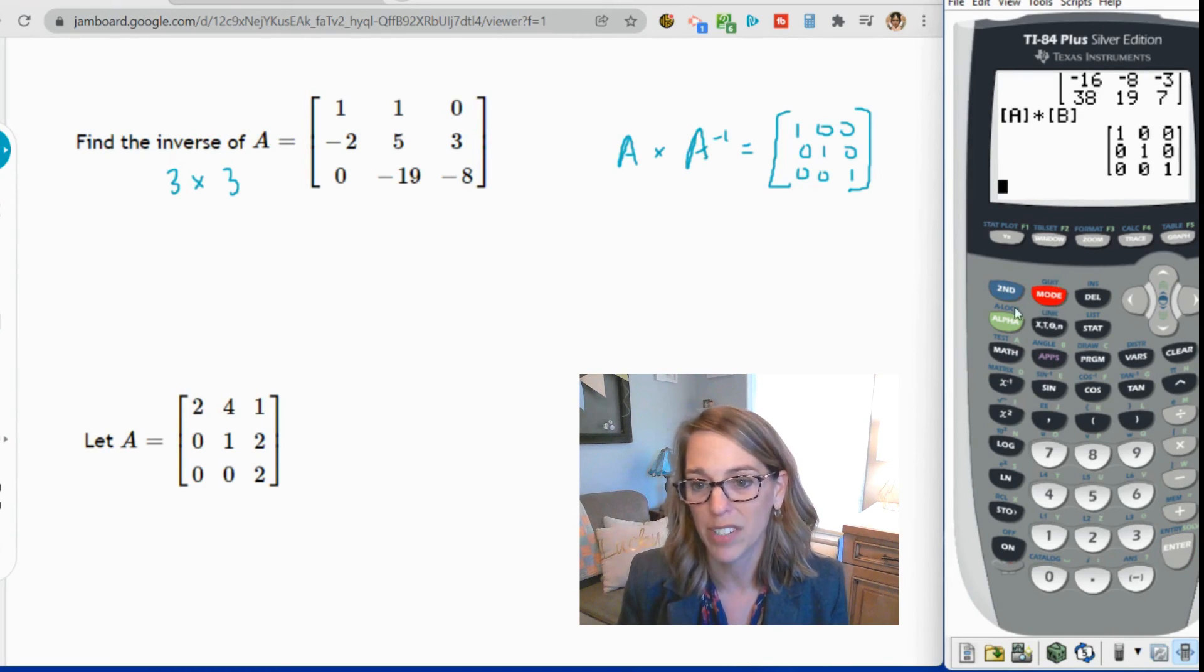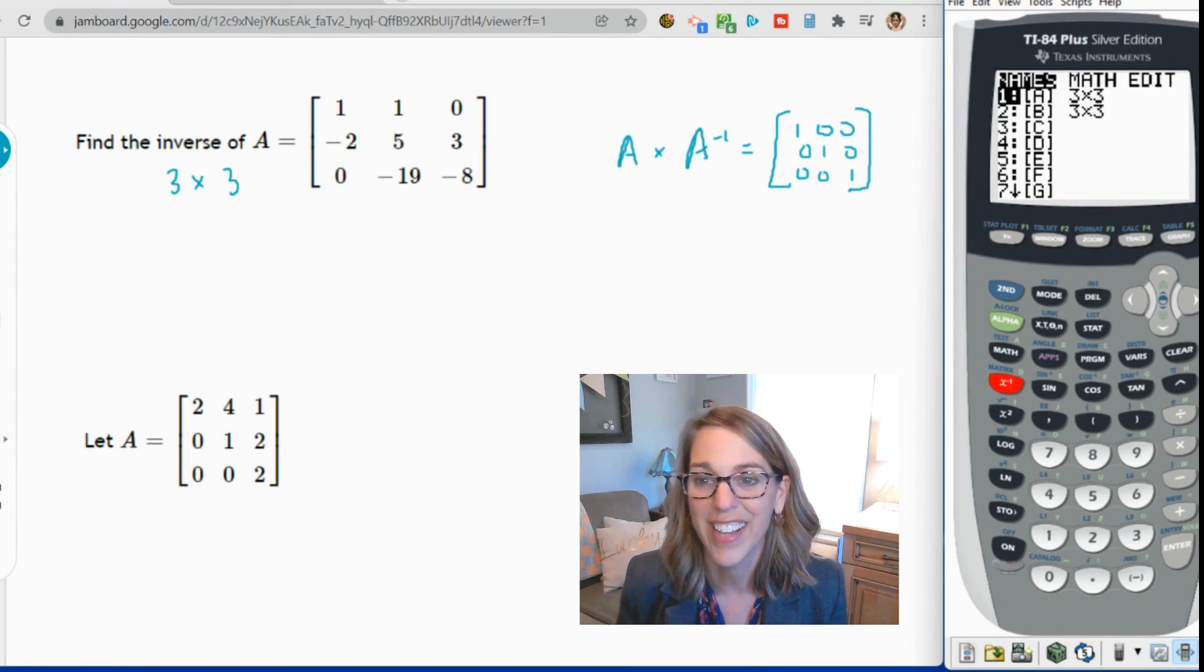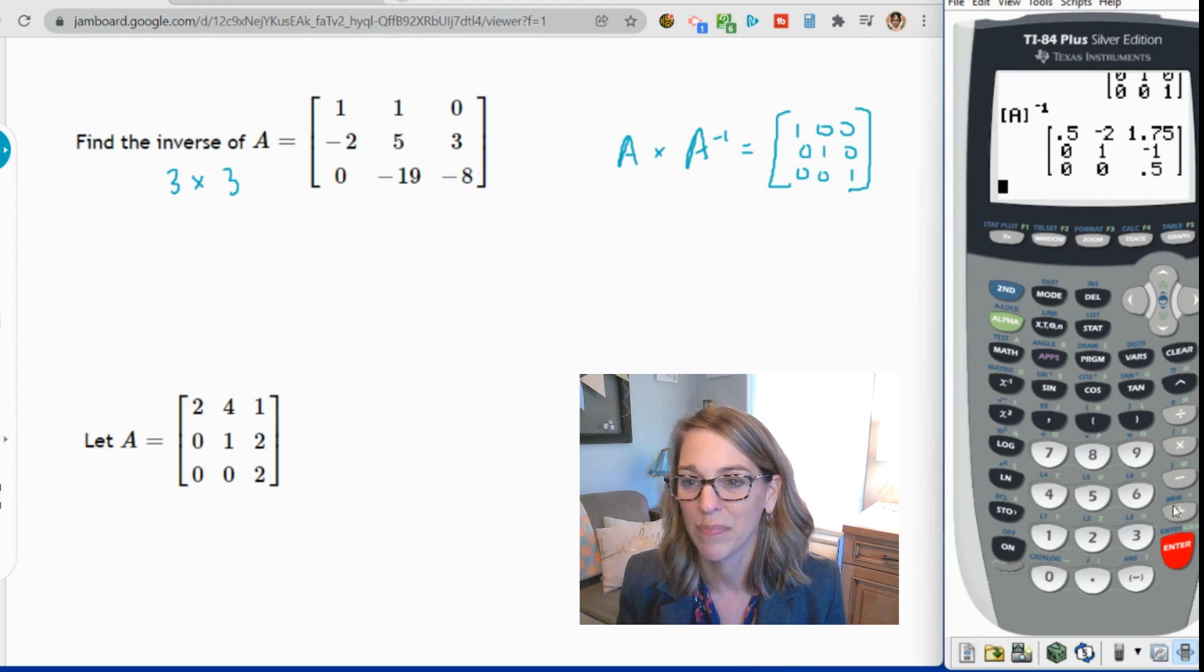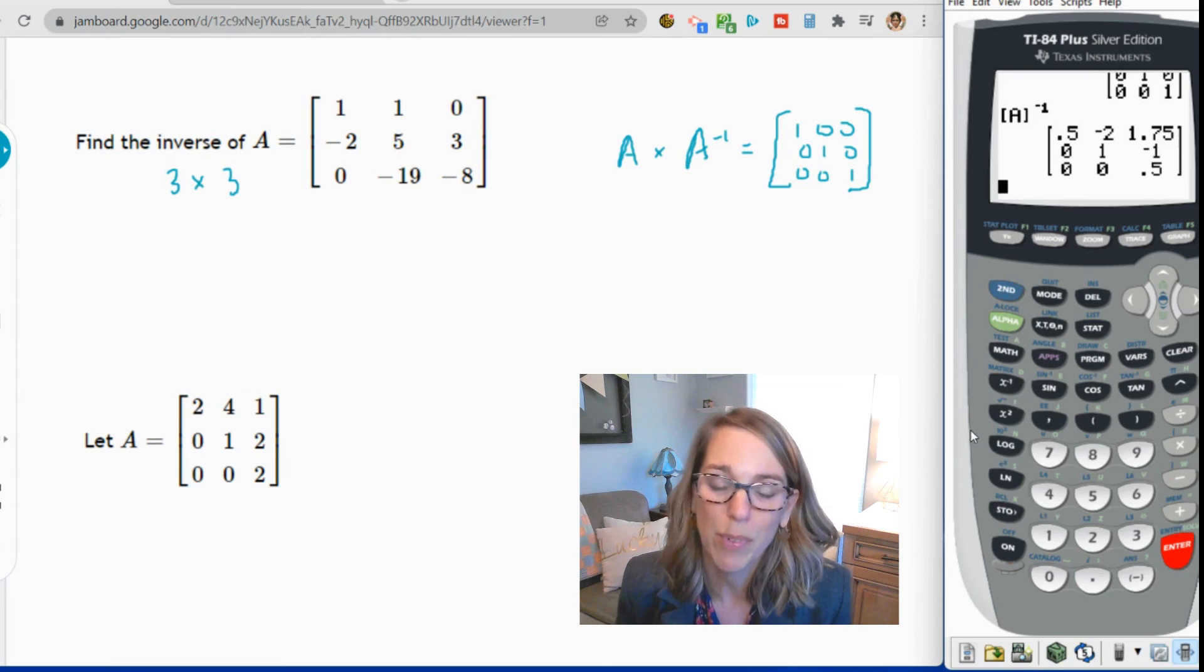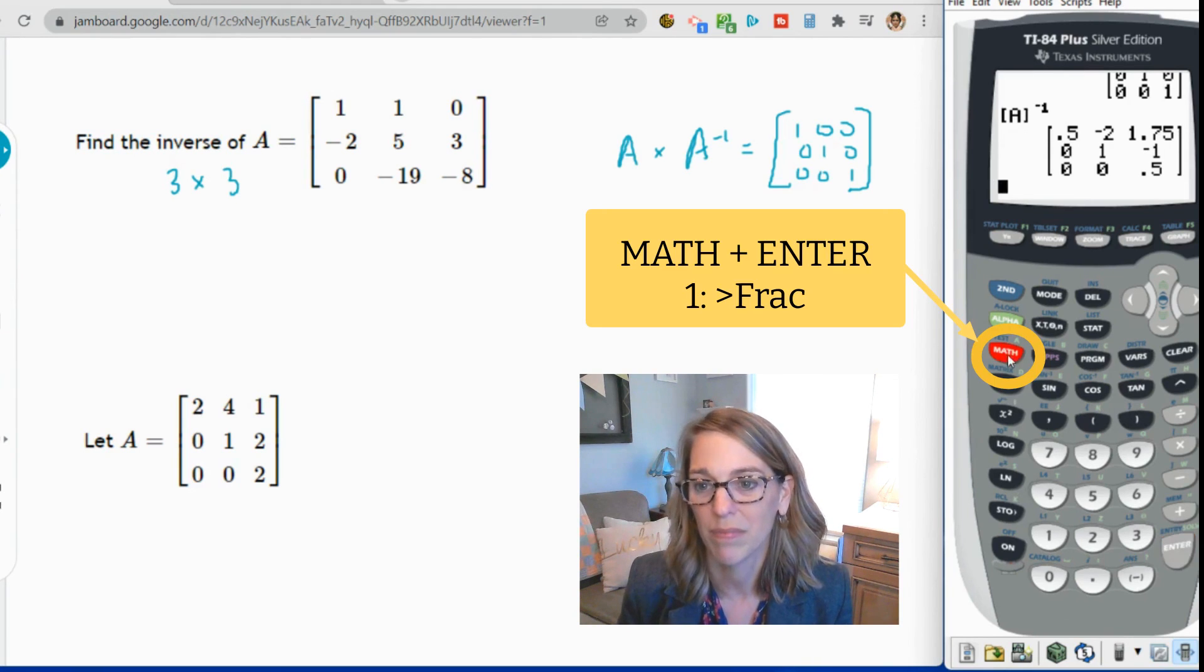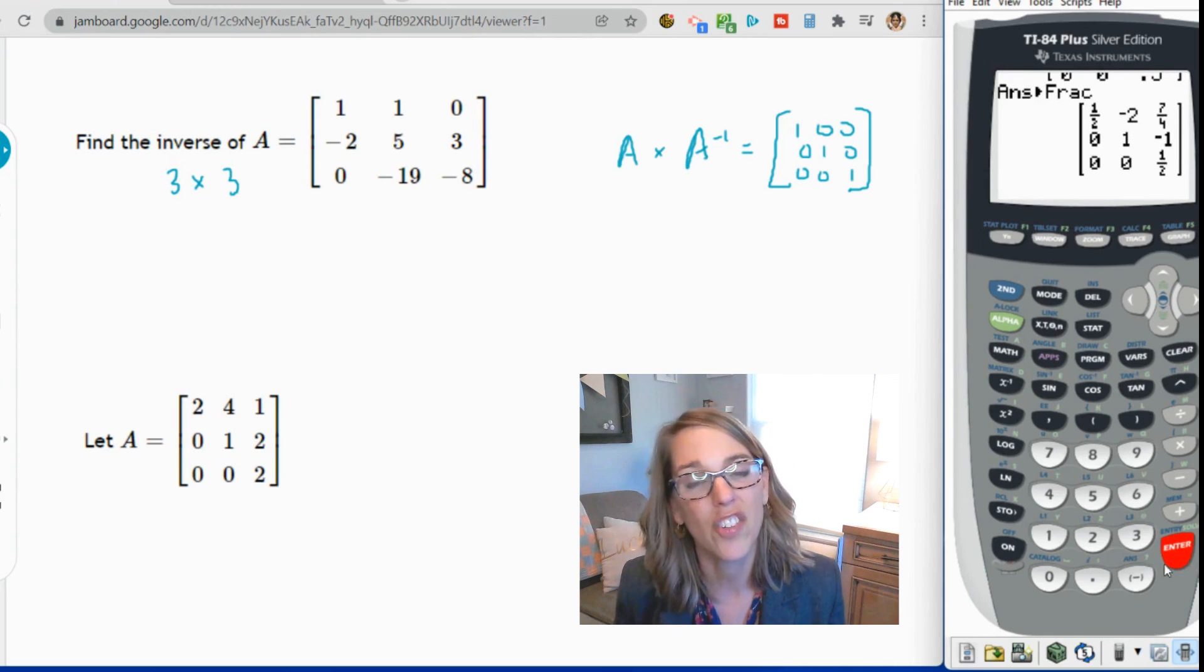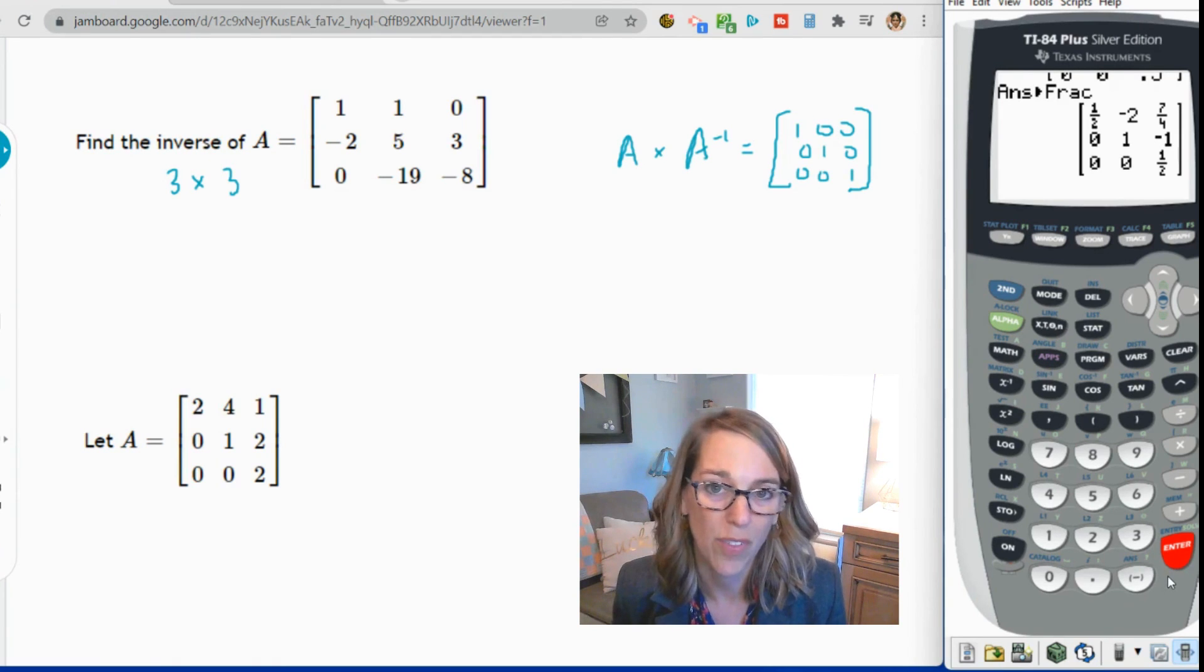I'm going to go ahead and grab matrix A. So second, matrix. I'm going to grab matrix A and ask for its inverse. So I'm going to go second. Oh, not second. I'm just going to grab the inverse, which is this button right here, and then hit enter. And I end up with this. I could just convert these pretty easily, but I want to show you how you can take an answer with decimals and easily convert it. So I'm going to choose the math menu, and I'm going to go convert to fraction. So now it says, what's your answer converted to a fraction? You hit enter, and it changes those entries into fractional form just in case the answer that you wanted was in fractional form.